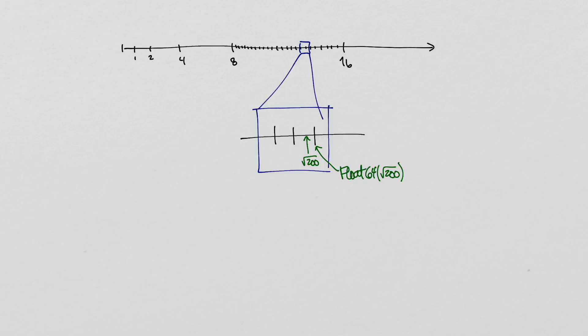The difference between square root of 200 and the float 64 value that represents it is error, and in this case the error is about 5 times 10 to the minus 16th. The relative error is this amount divided by the square root of 200, which is about 3.7 times 10 to the minus 17th.